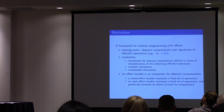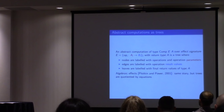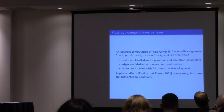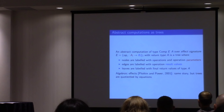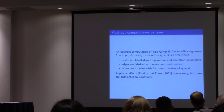So there we have some trees. We can view these abstract computations as trees over the signature of operations that eventually return some final return value. The nodes of these trees are labeled with the operations and their parameters, and the edges indicate the result values from the operations. The leaves give you the final result. Algebraic effects, introduced by Plotkin and Power, are essentially the same thing, except you actually quotient these trees by some equations to give meaning to the operations. But in this setting, we're not going to worry about the equations.